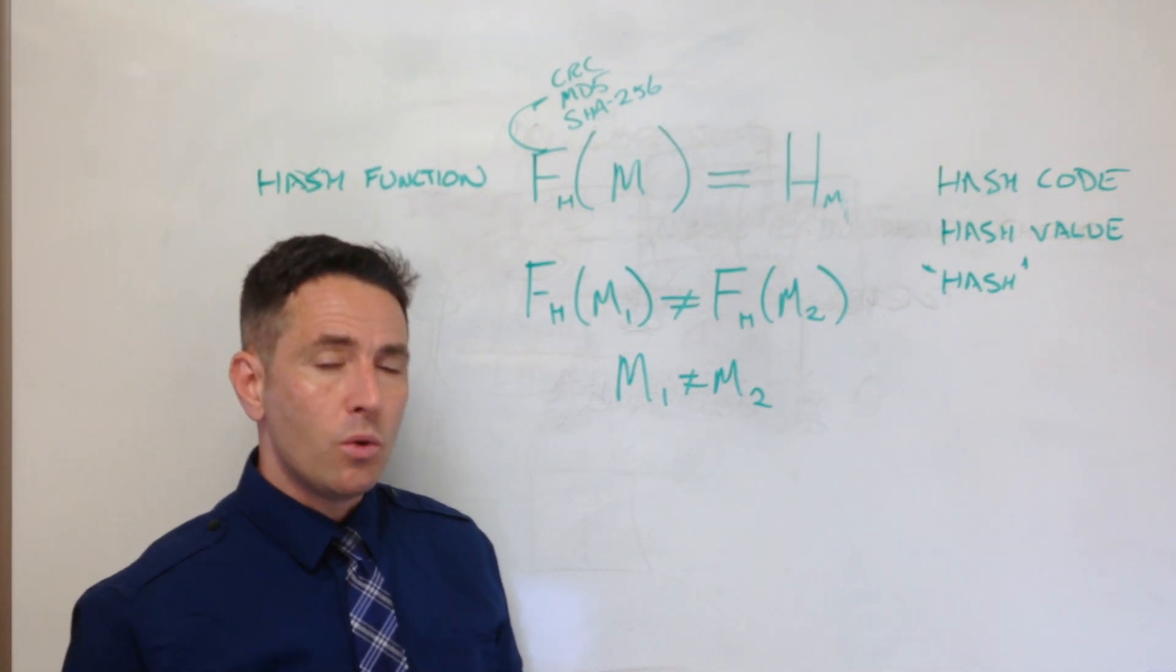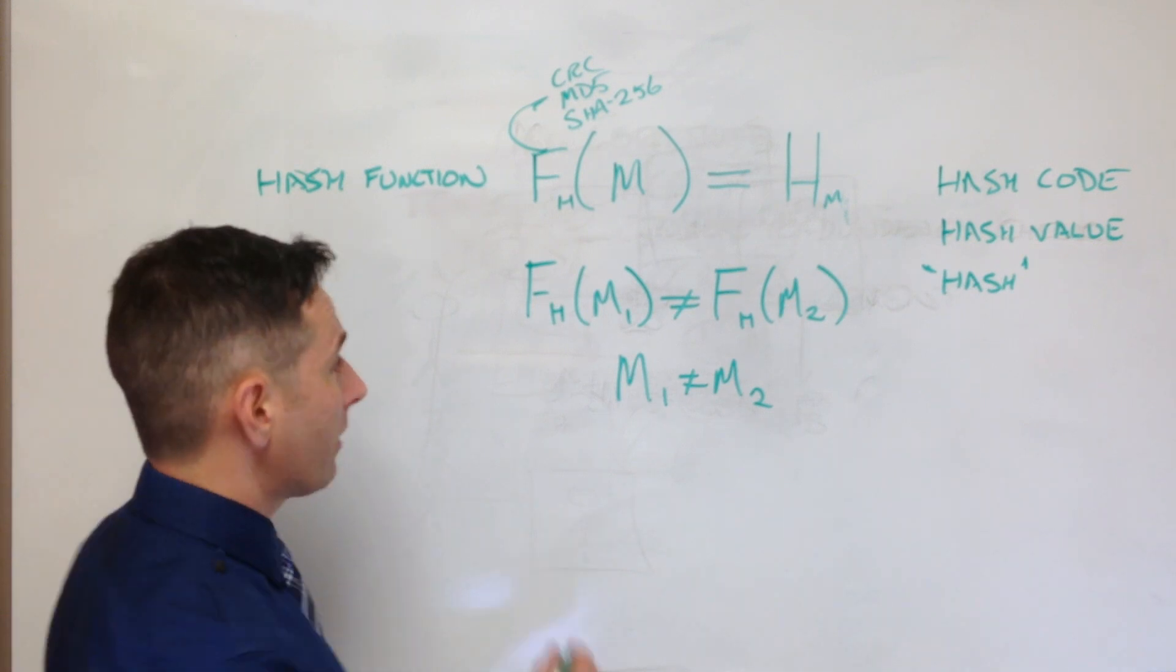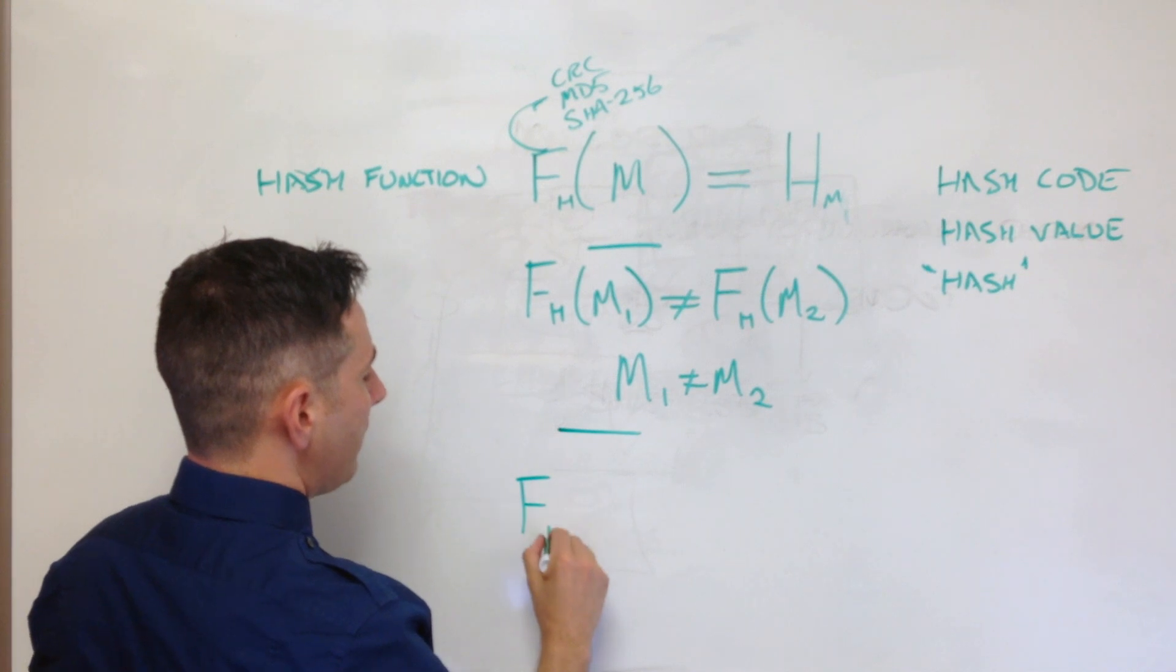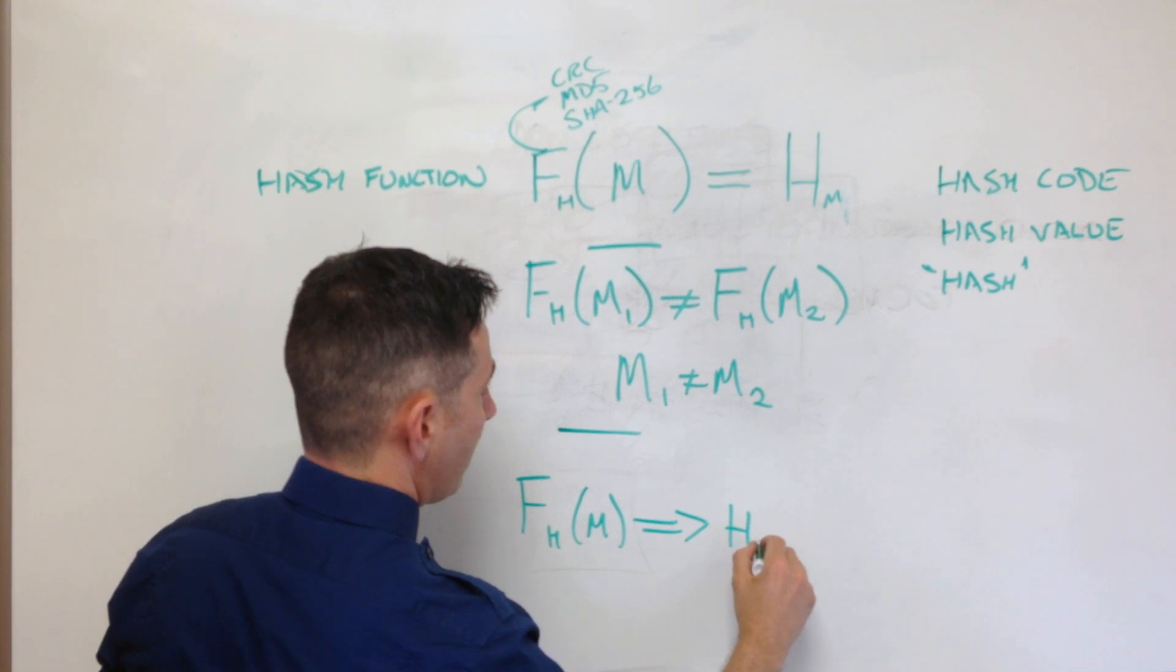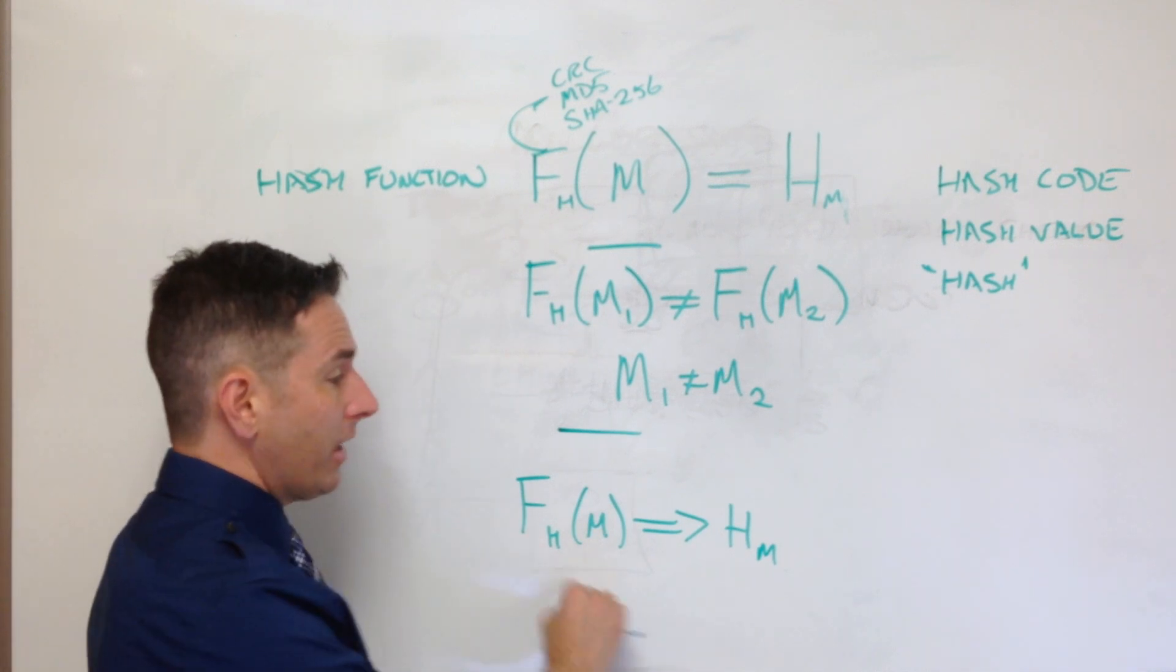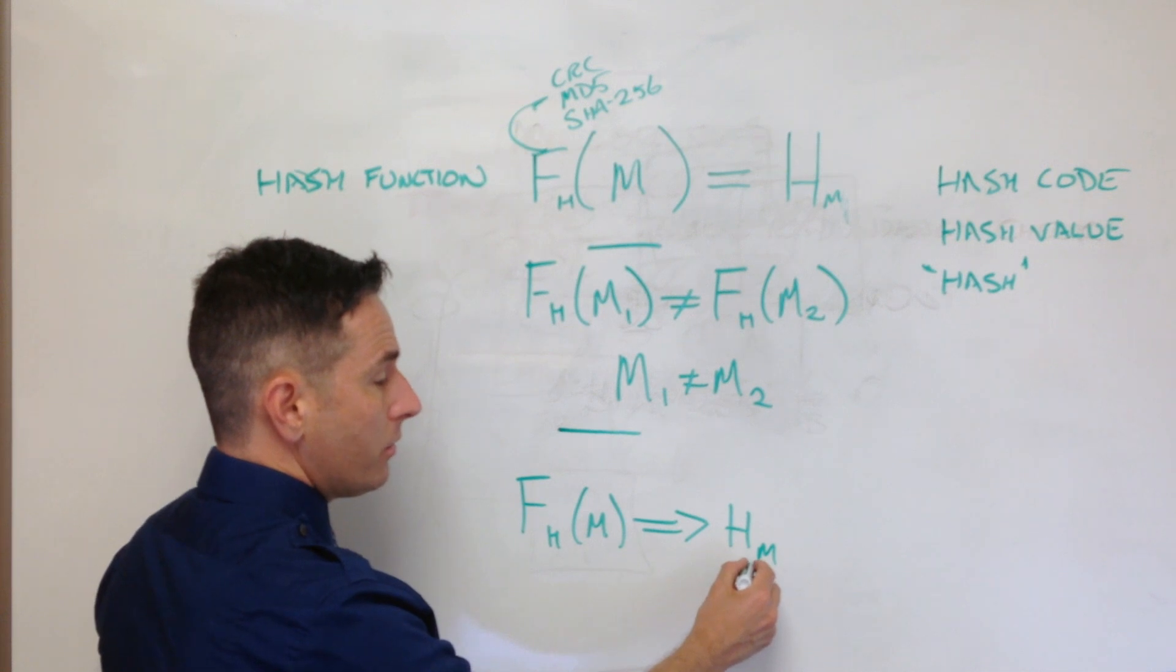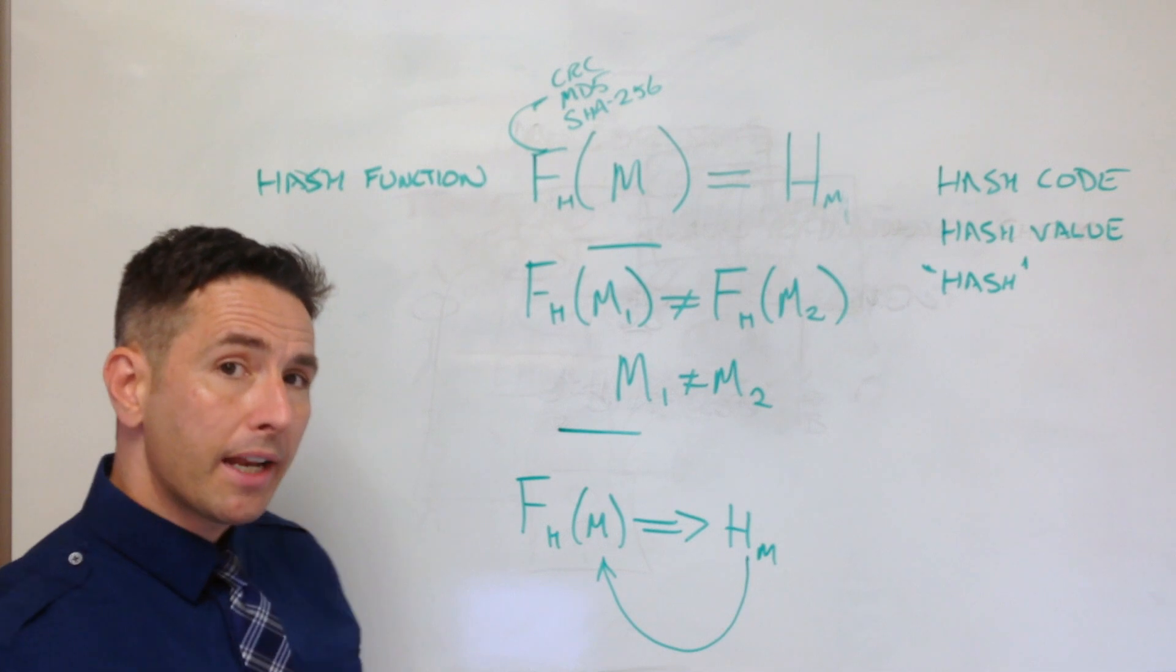Another really important thing that you want is you want this hash function to be something that we call a one-way function. And what we mean by that is that we want it to be easy to calculate this fingerprint, but we want it to be very hard to just take this fingerprint and understand what the message is that created it.